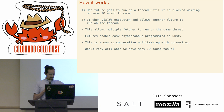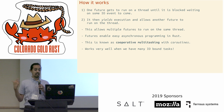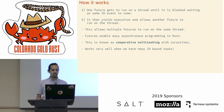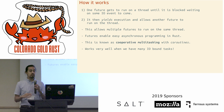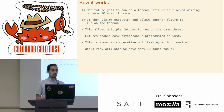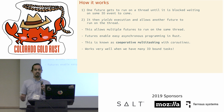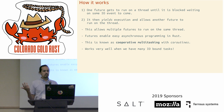One future gets to run on a thread until that future gets blocked waiting for some I/O event. Then it yields execution and allows some other future to run on that thread. This allows multiple Futures to run on the same thread, which really maximizes how we're using that thread. Futures enable easy asynchronous programming in Rust, which was one of the main motivations for implementing them. You could do this through libraries, but having language syntax and language support really helps.